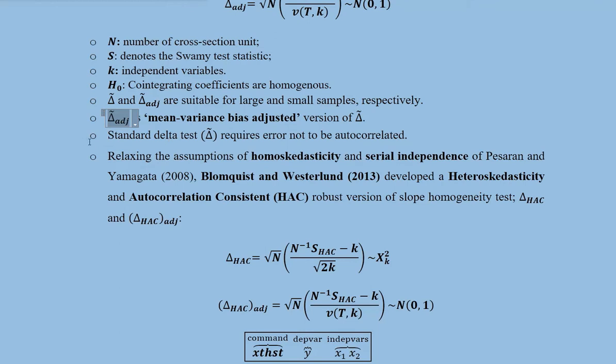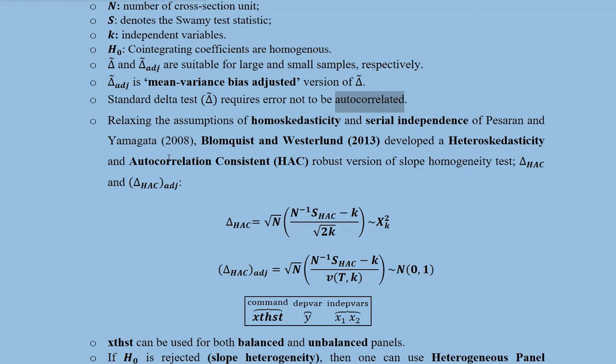Furthermore, the standard delta test requires error not to be autocorrelated. So the autocorrelation in the error is not a requirement in this standard delta test. Now there is another version of it.